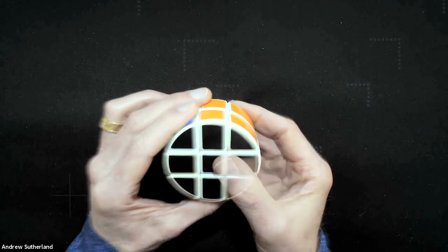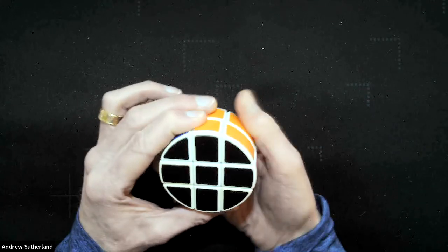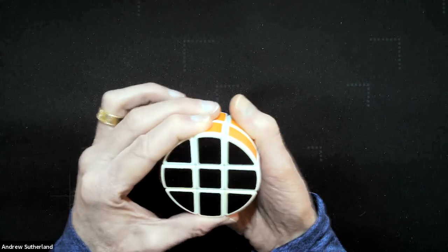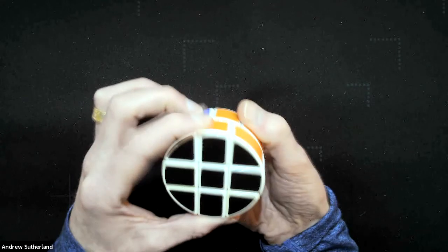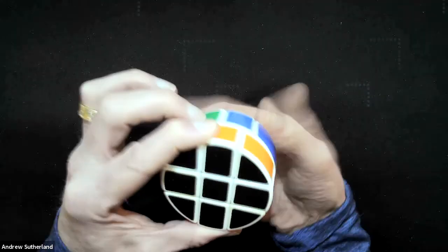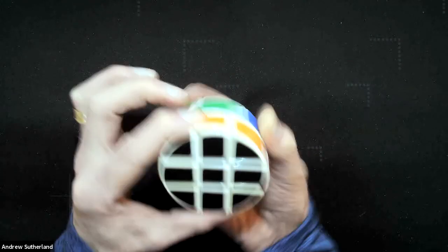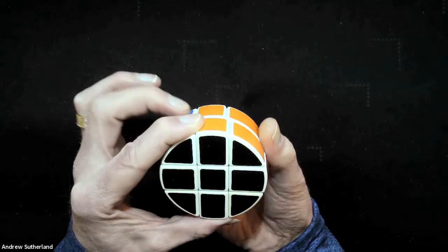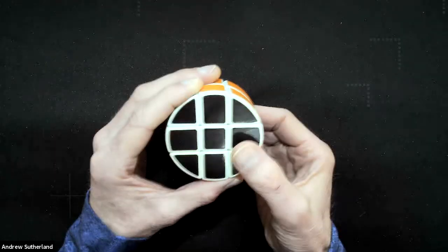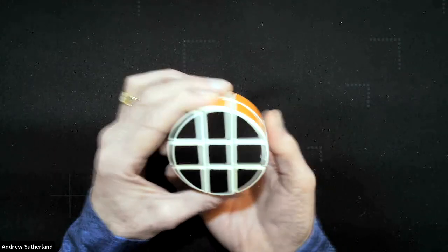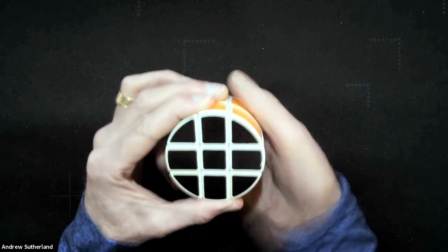Okay, so we have a quarter turn clockwise and counterclockwise the back face. We could also rotate the back face 180 degrees, and that move is denoted with a capital B. So now I would have green and orange lining up instead of orange. Okay, so those are the three moves that move the back face: either 90 degrees, 270, or 180.